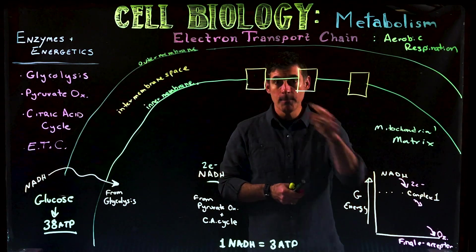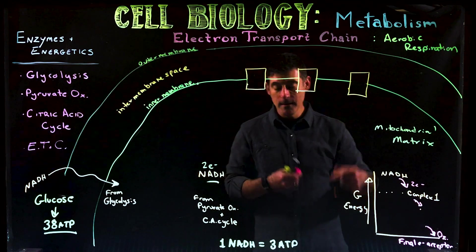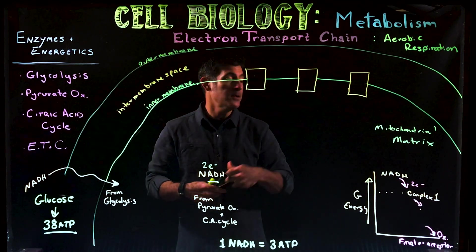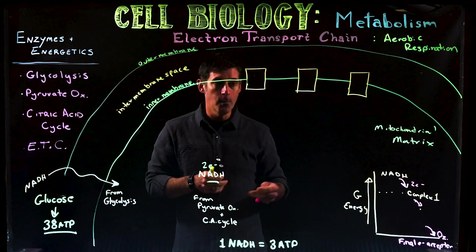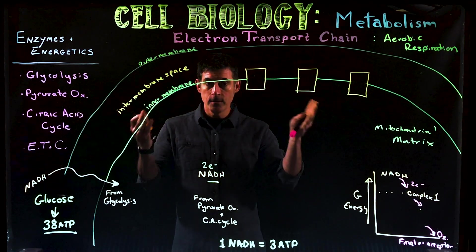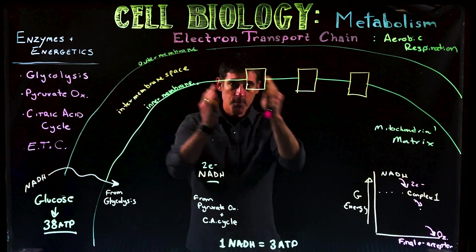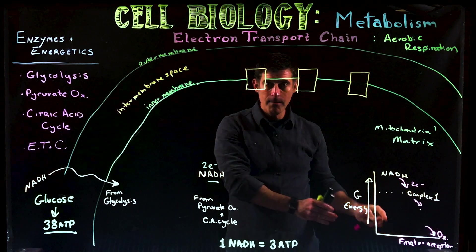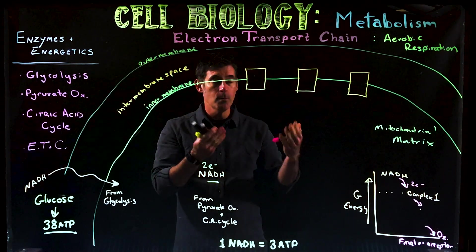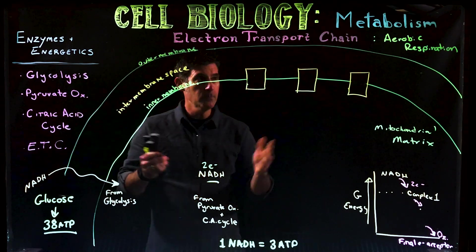Each time the electrons are passed along, they go to a lower energy state, which means energy has to be given off — energy can't be created or destroyed, it changes form. That's the whole point of the electron transport chain: to take electrons in a high energy state, transport them to a low energy state, and convert that energy into something else, which is what we're going to talk about now.